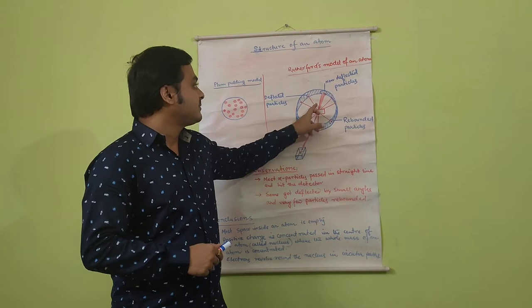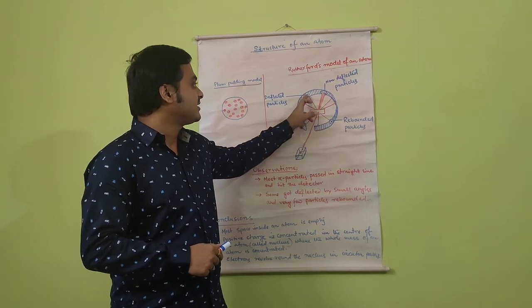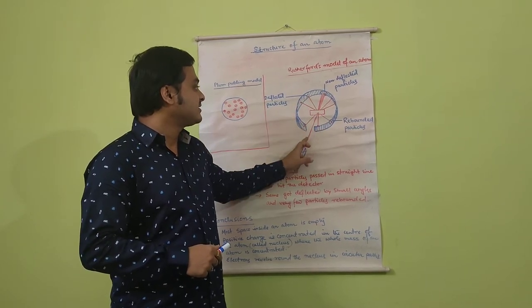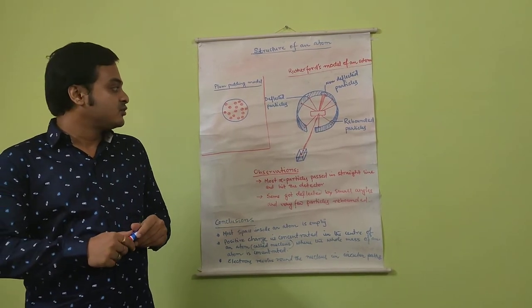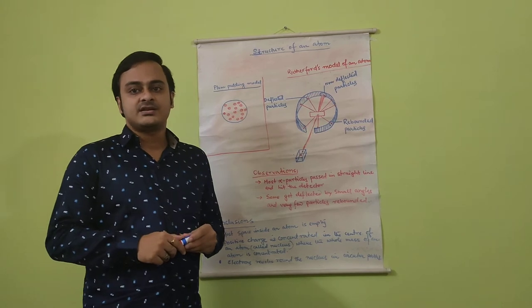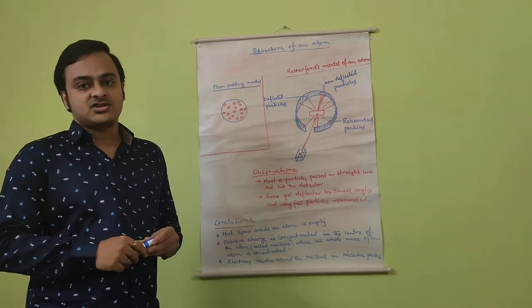Most of the alpha particles traveled in straight lines, some deflected from their original path, and some others rebounded. Now, why did Rutherford select the alpha particle in the first place?